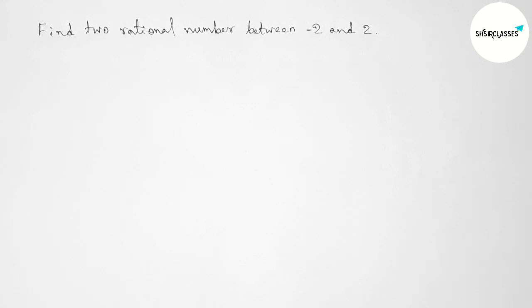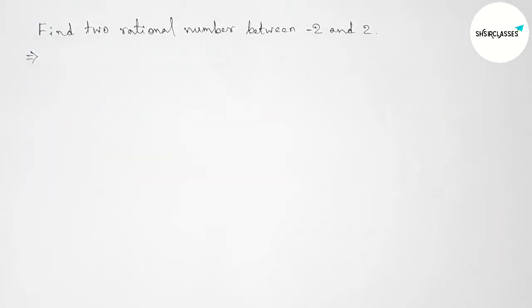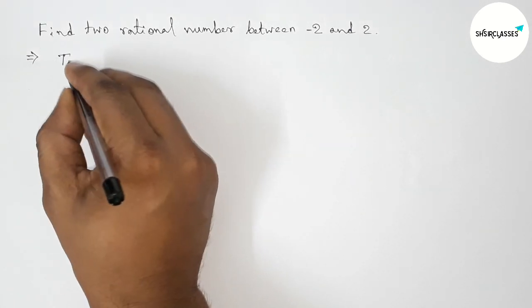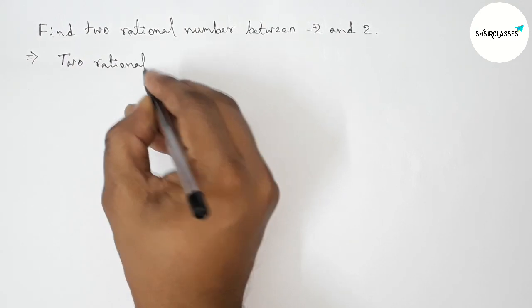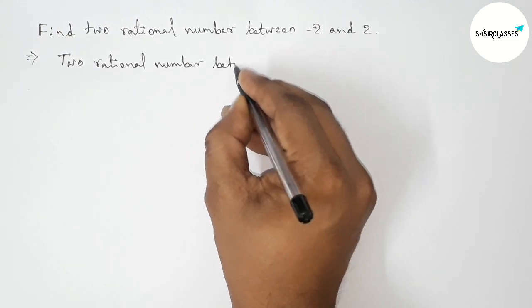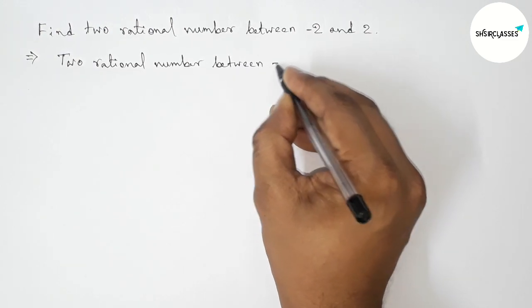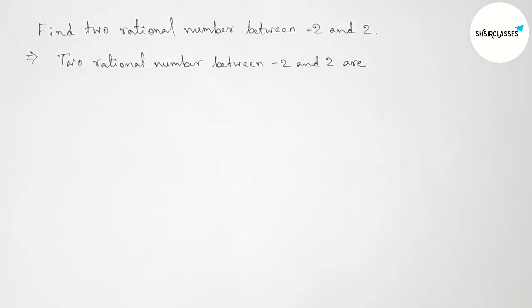First of all, let us solve this problem. We have to find two rational numbers between minus two and two. We can get many rational numbers between minus two and two, but we have to find only two rational numbers.